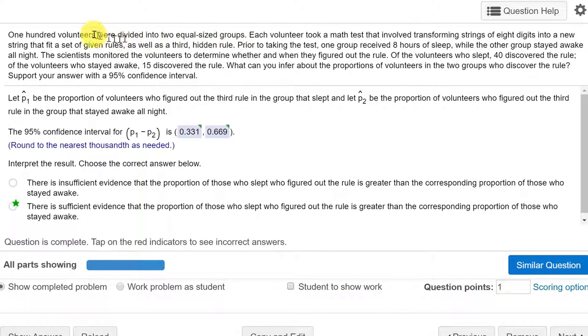It says we have 100 volunteers divided into two equal size groups, that means 50 each. Each volunteer took a math test that involved some rules including one that was hidden. Prior to taking the test, one group received eight hours of sleep while the other had no sleep.